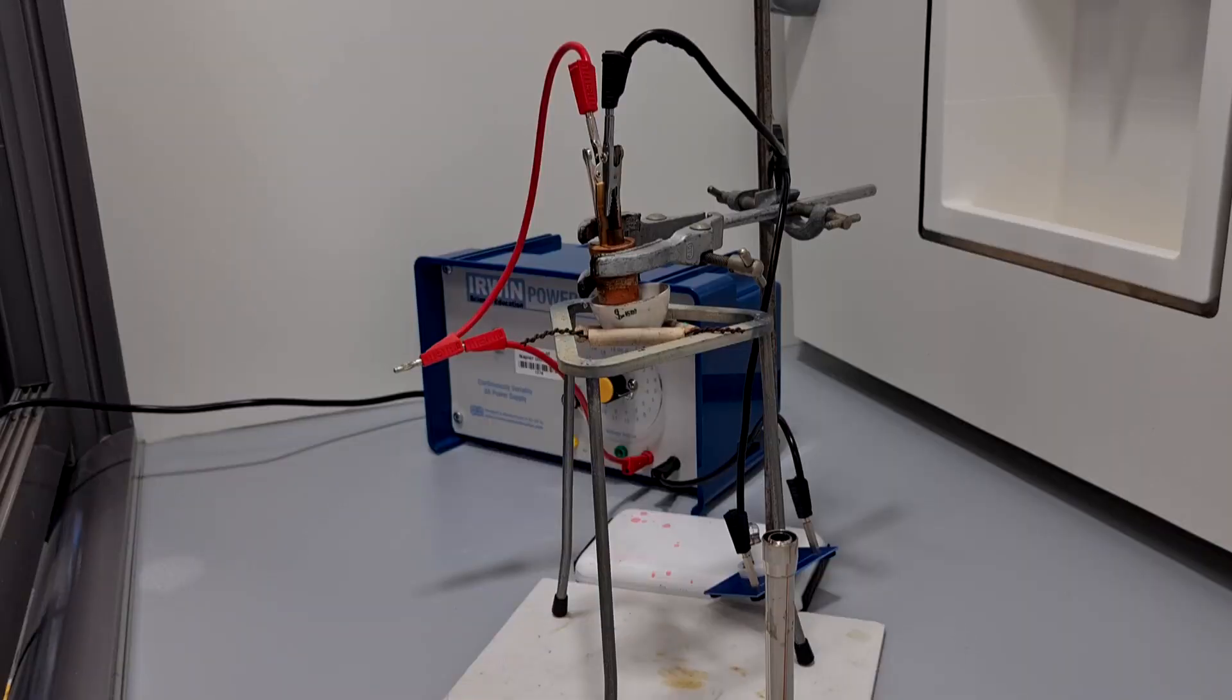And you can see now that as the zinc chloride has turned from a liquid back into a solid as it's cooled down, that the light bulb has gone back out again, showing that the ionic solid is not conducting electricity.